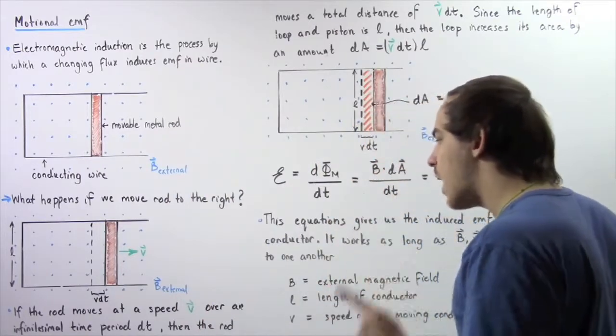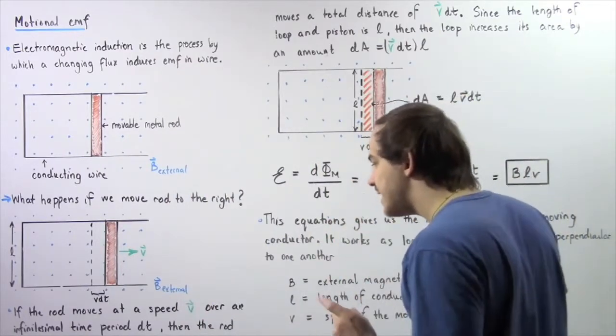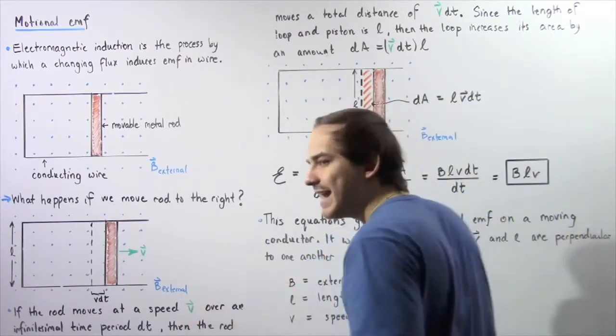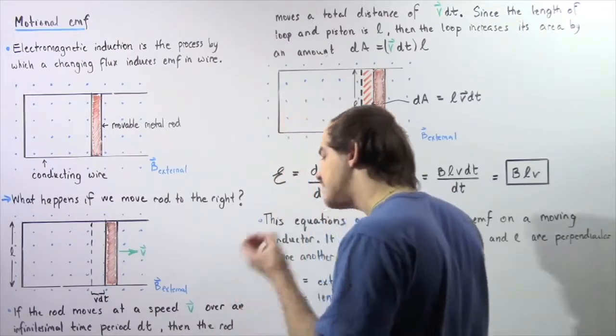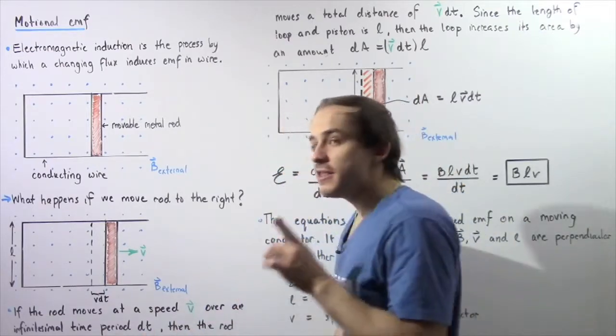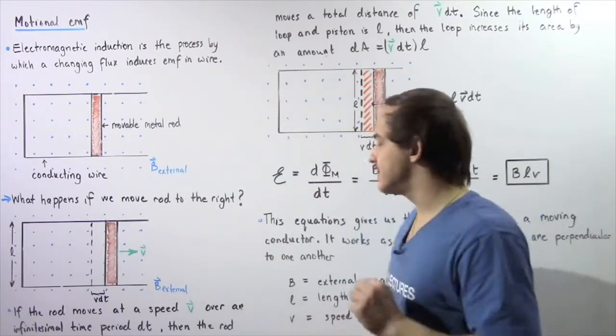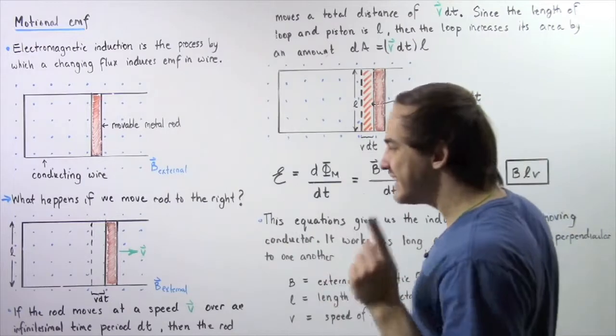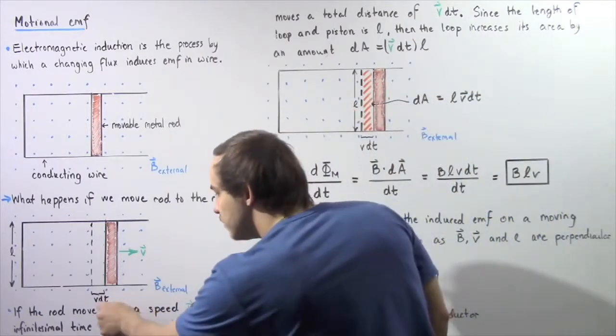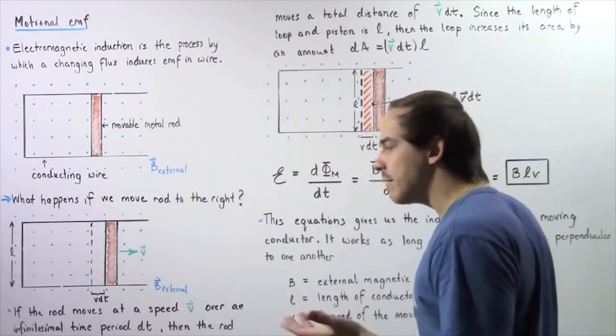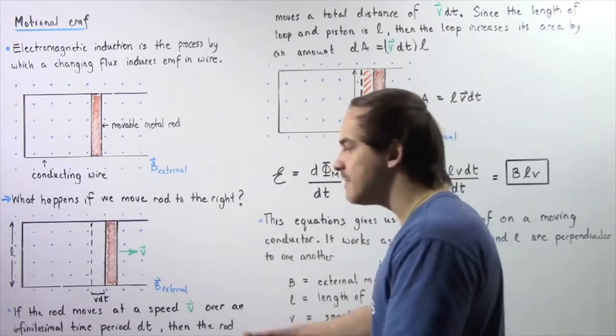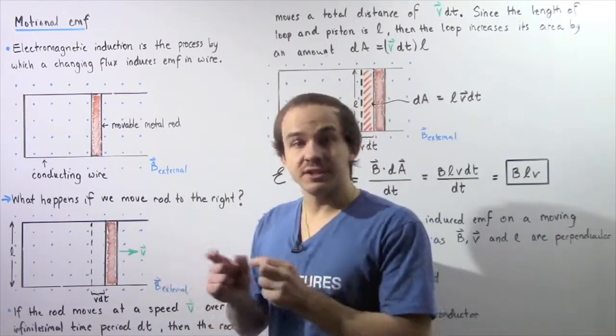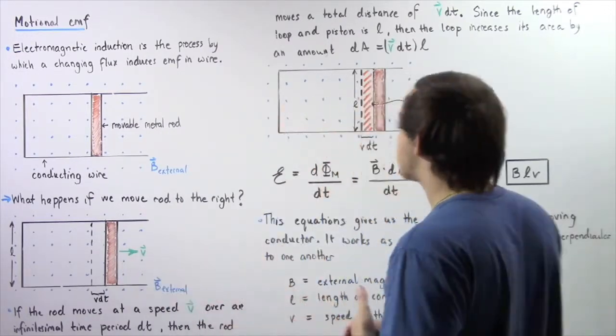If the rod moves at a speed of V over an infinitely small time interval given by DT, then that implies by the distance equation the rod will move a total distance given by DT multiplied by V. Remember, velocity times the time gives us our length of distance that our object travels.